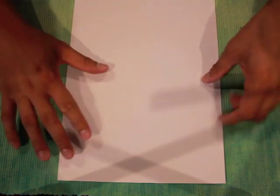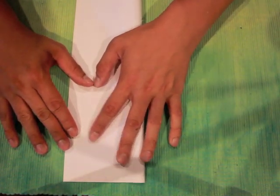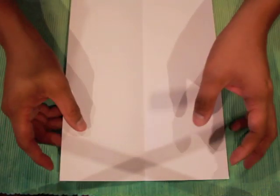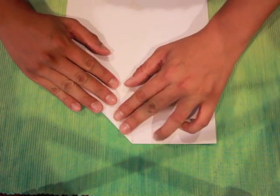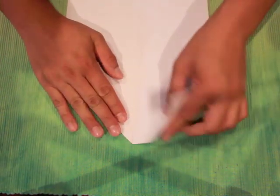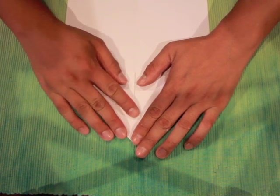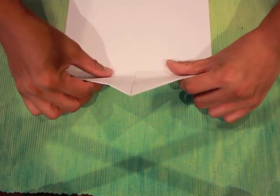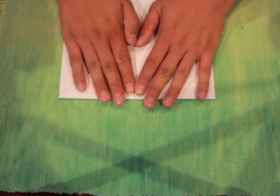Start off with an A4 paper. Fold it in half and do that here. Make it equal. Fold it down that way.